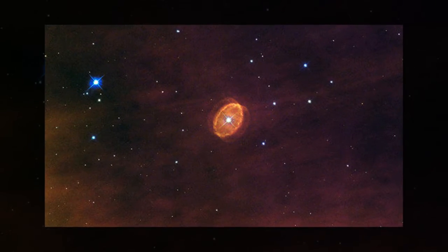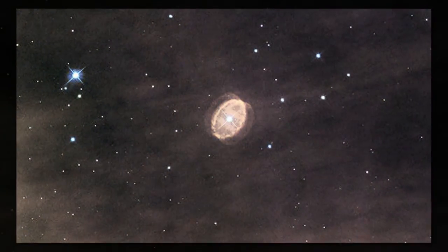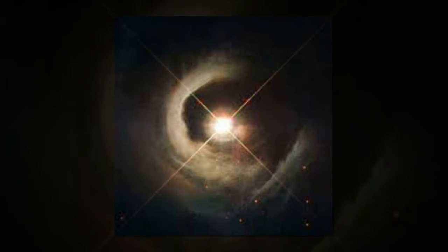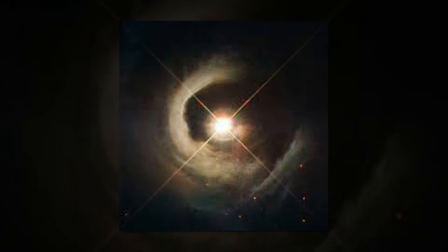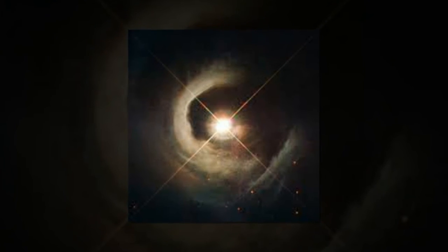Planetary nebulae are illuminated for around 10,000 years before the central star begins to cool and shrink to become a white dwarf. When this happens, the star's light drastically diminishes and ceases to excite the surrounding gas, so the nebula fades from view.